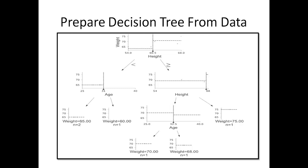Why am I discussing about the decision tree? The gradient boosting method is a modified decision tree approach. In random forest, we are generating T trees and creating a forest — that's why it is called random forest. Similarly, in the gradient boosting method, we are also using decision trees. That's why I discussed the decision tree in detail.